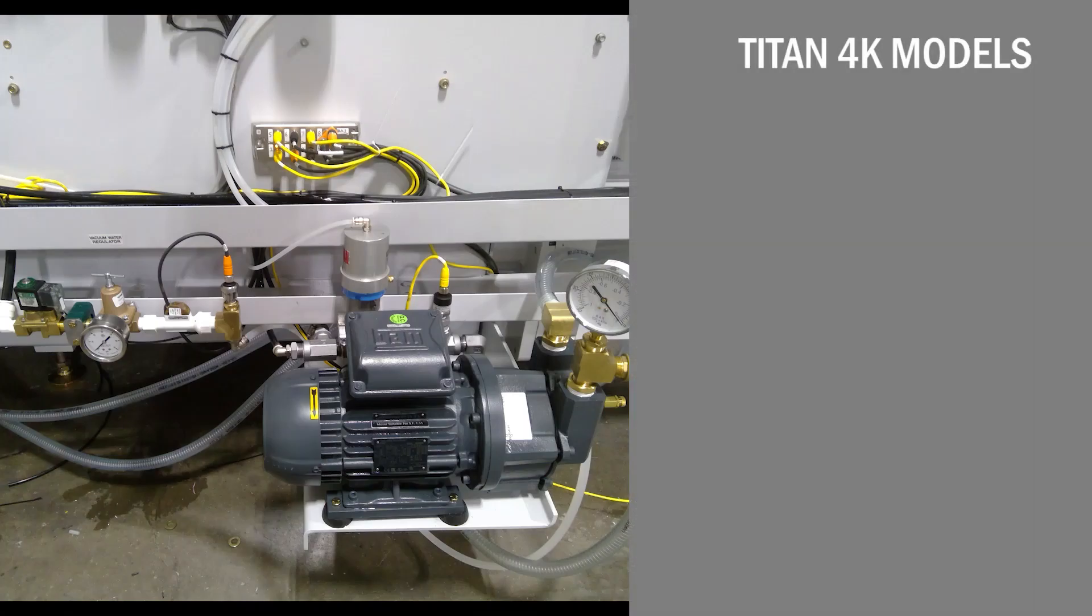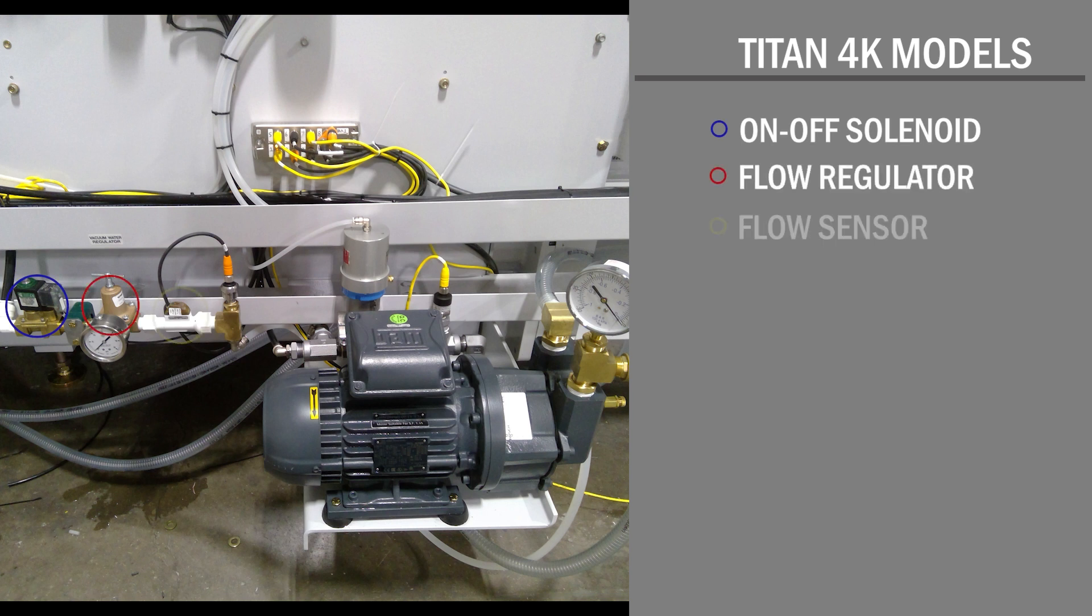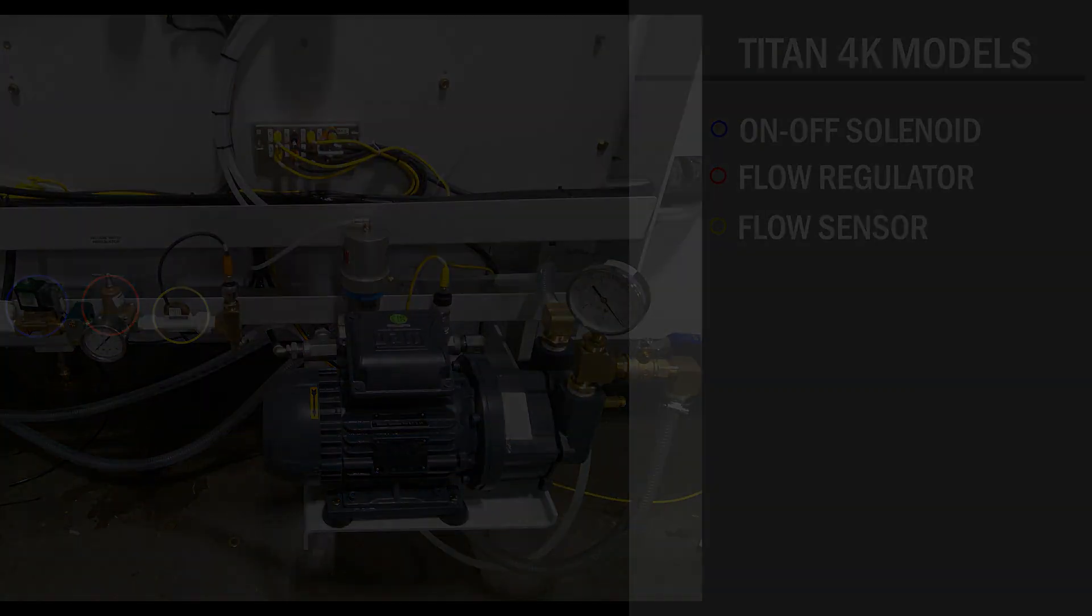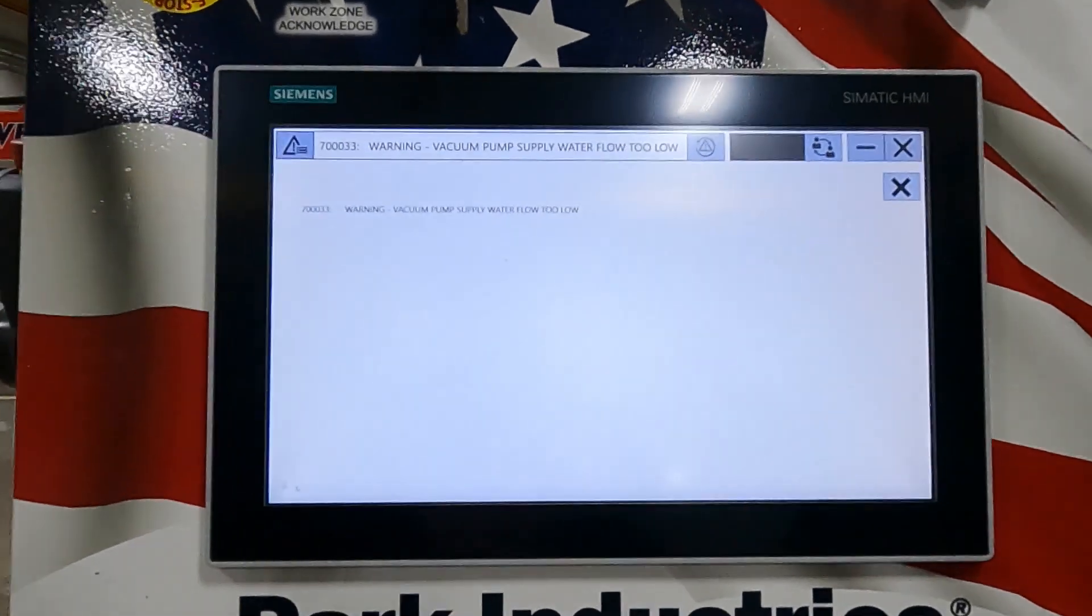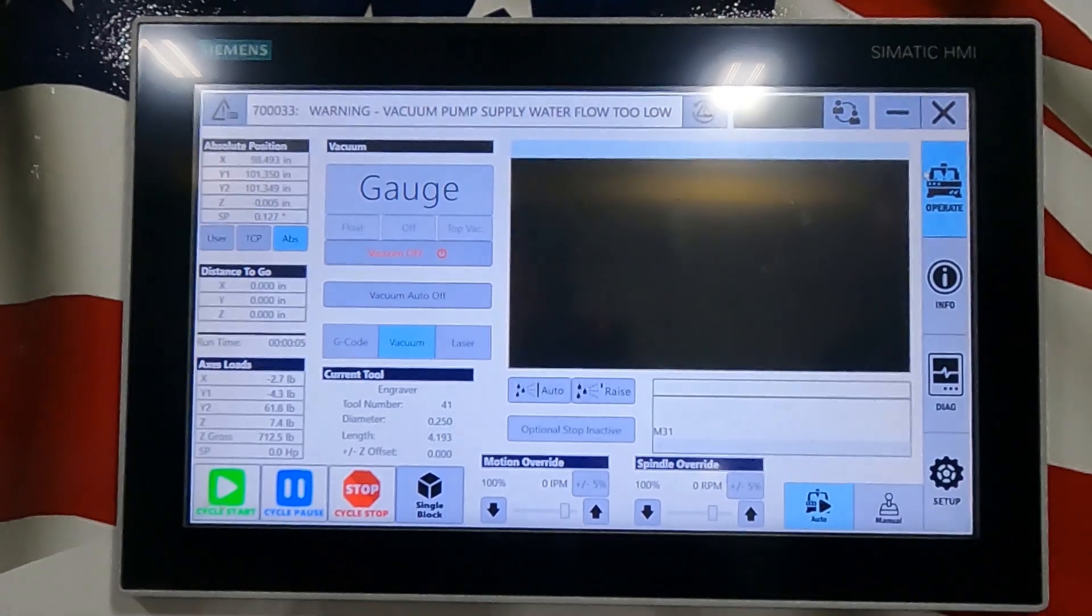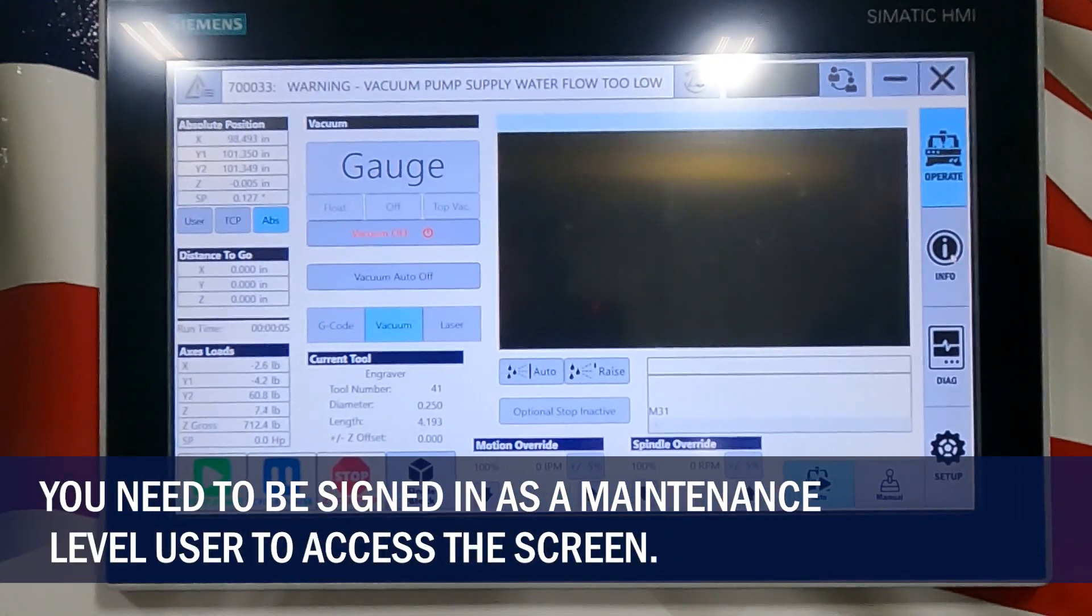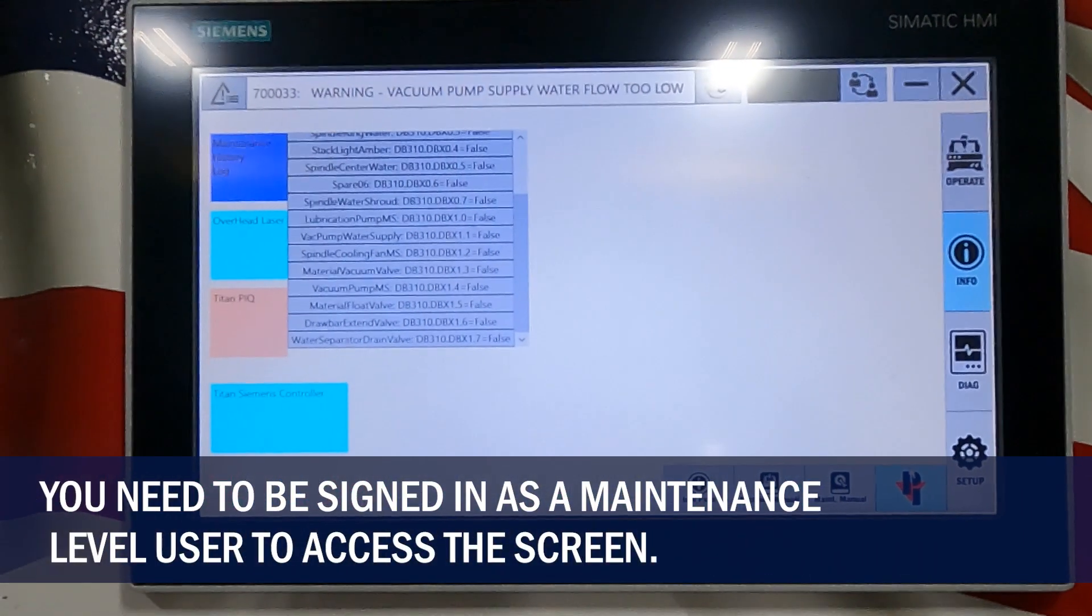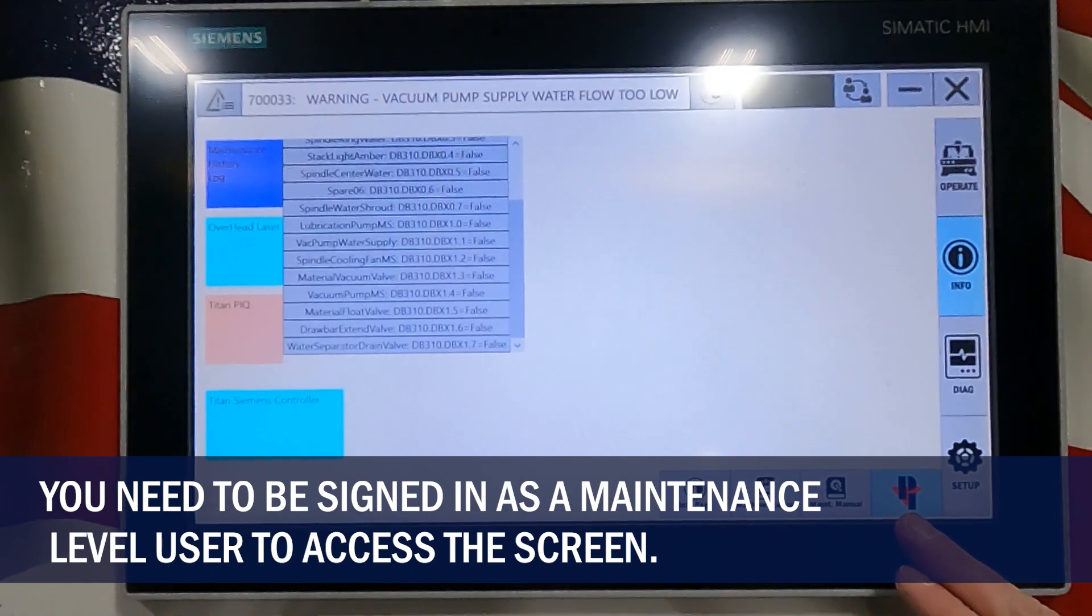So we'll go back up and show you how to manually turn on that on off valve. Come back to your screen here. X out of our alarm. We'll click on our info tab and the Park Industries tab down here.